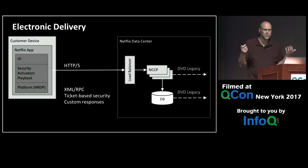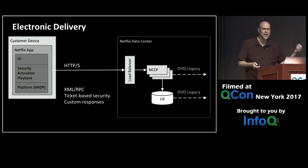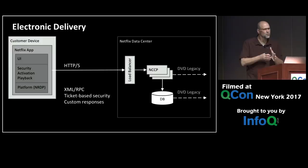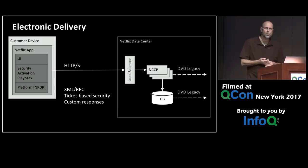The infrastructure was simple and primitive. It was HTTP-based, with an application stack that had user interface components, security, activation, and playback capabilities, plus an underlying platform called NRDP — the Netflix Ready Device Platform. It talked over HTTPS using an XML RPC-style protocol. Everything about this implementation was very custom: a custom ticket-based authentication system, custom response codes, and a lengthy design process for each version of the protocol. It plugged into a simple hardware-based load balancer with one application, NCCP — the Netflix Content Control Protocol service — which had its own database and plugged into the Netflix legacy infrastructure.